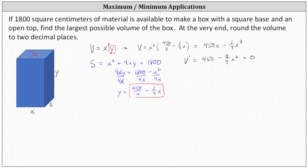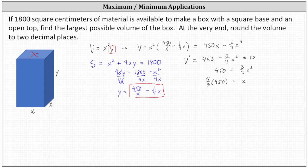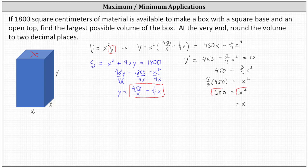Adding three-fourths x squared to both sides gives us 450 equals three-fourths x squared. Multiplying both sides by the reciprocal of three-fourths, which is four-thirds, gives us 600 equals x squared. Because x is a length, x must be positive, so we take only the principal square root. This gives us x equals the square root of 600. Since 600 equals 6 times 100 and the square root of 100 is 10, the square root of 600 simplifies to 10 square root of 6.